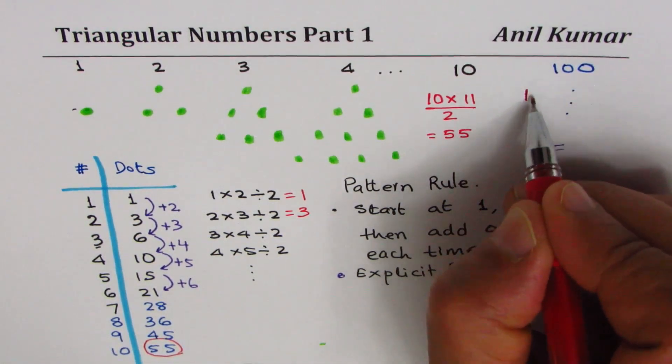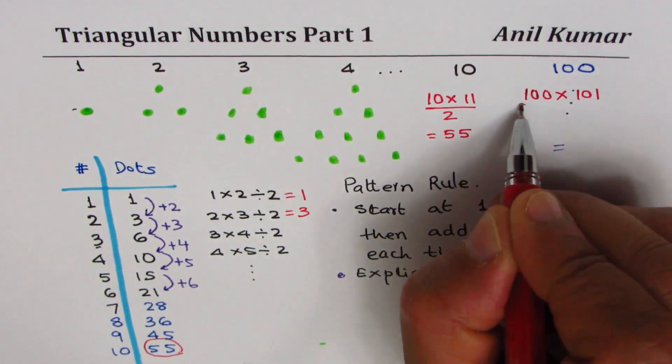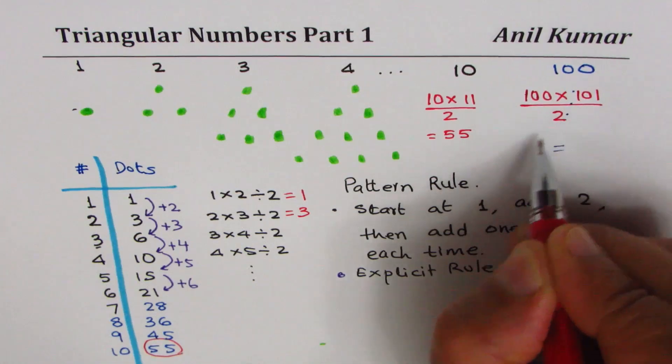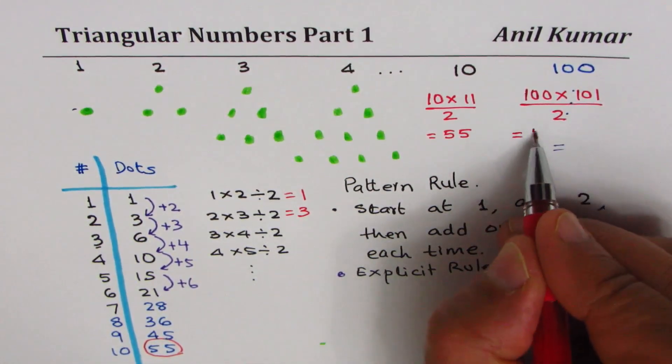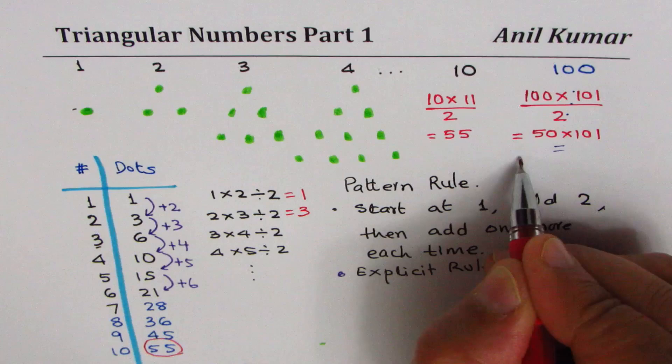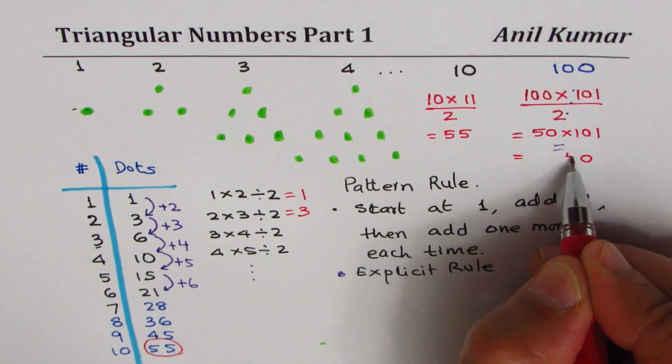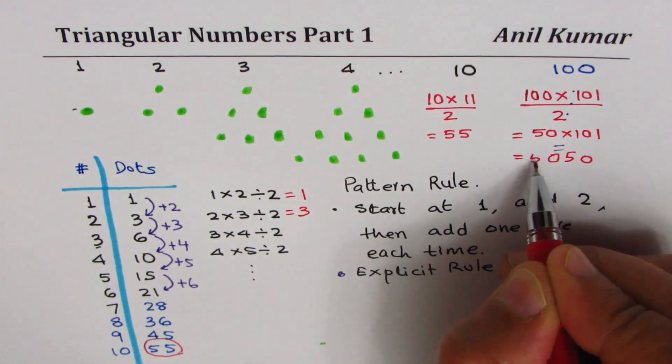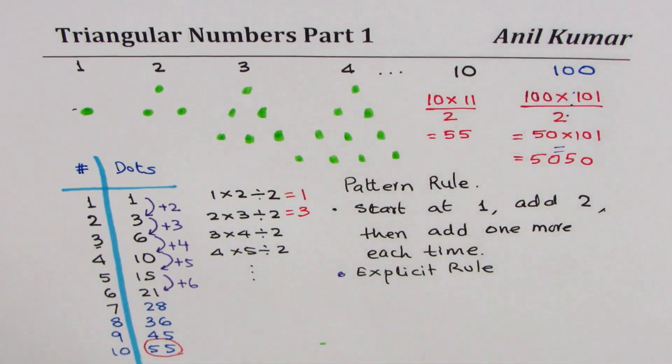With hundred, what should I do? Hundred times hundred and one divide by two. That will be my answer. So hundred by two is fifty. So we go fifty times hundred and one. Fifty means one zero you add and multiply by five. So five, zero, five. So you get five thousand fifty dots for the hundredth pattern.